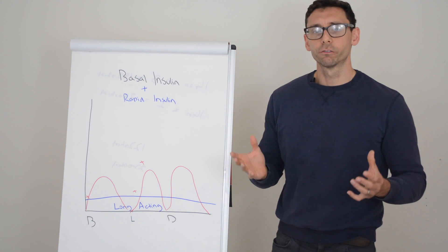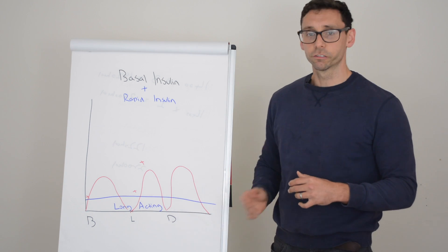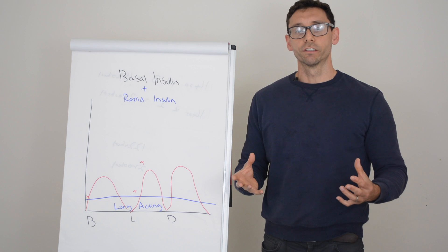One of the major drawbacks of rapid acting insulin for some people is how often you need to take it, particularly for someone that eats three square meals or you're more little and often throughout the day. It can mean quite a few injections.